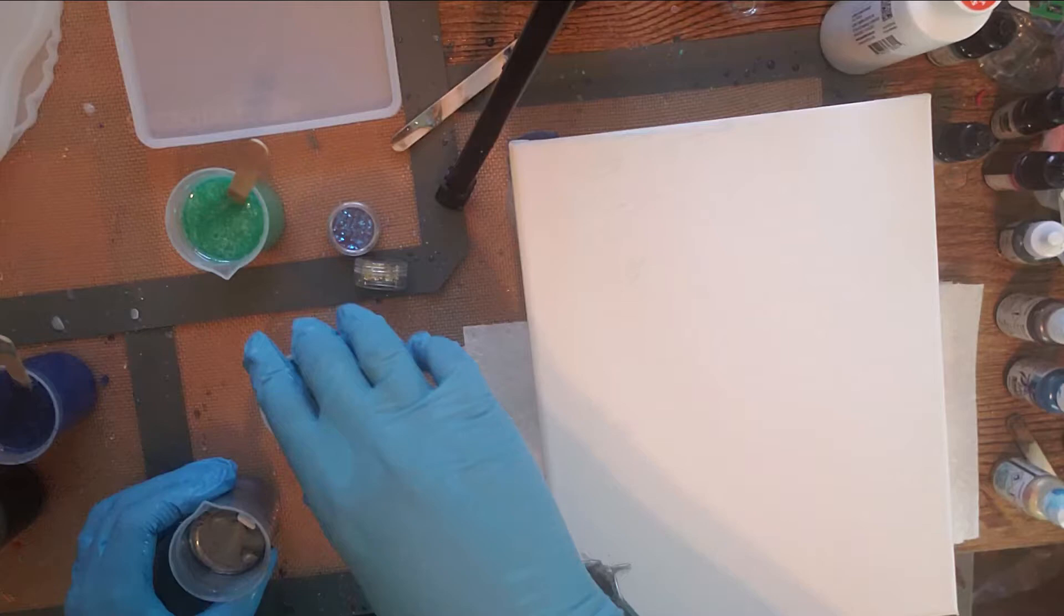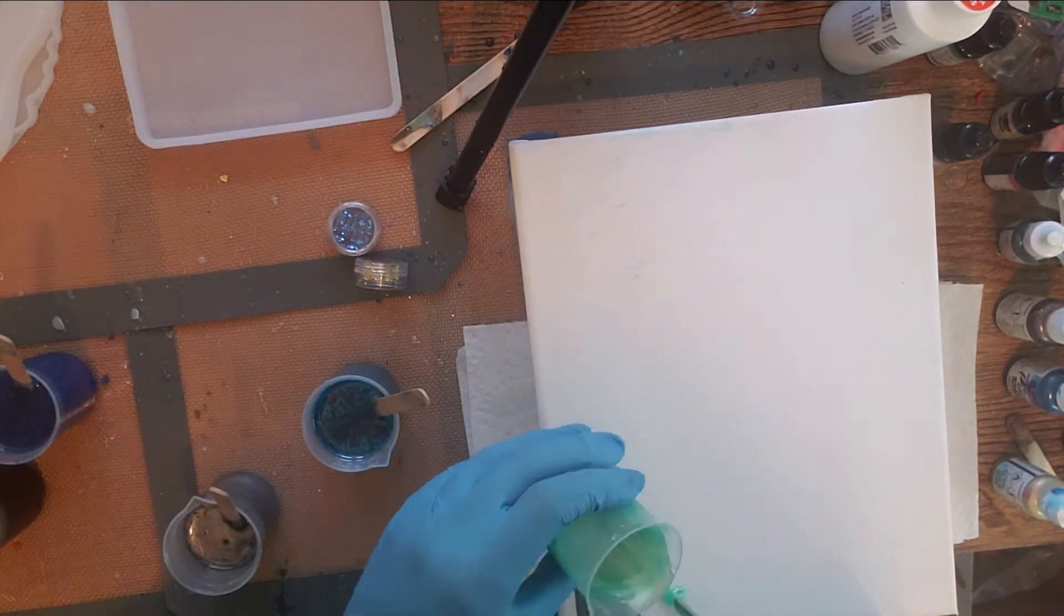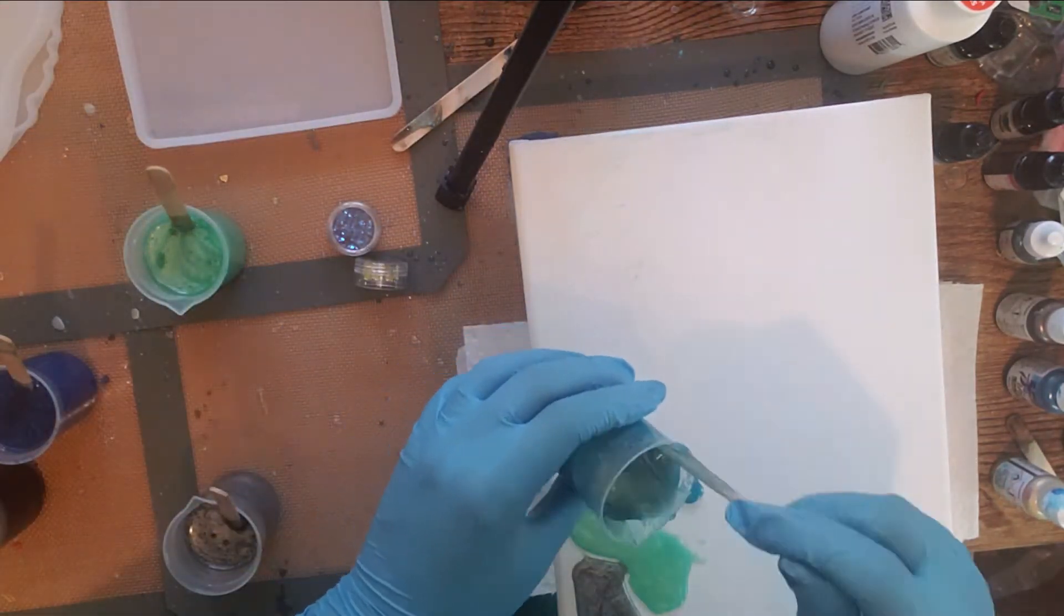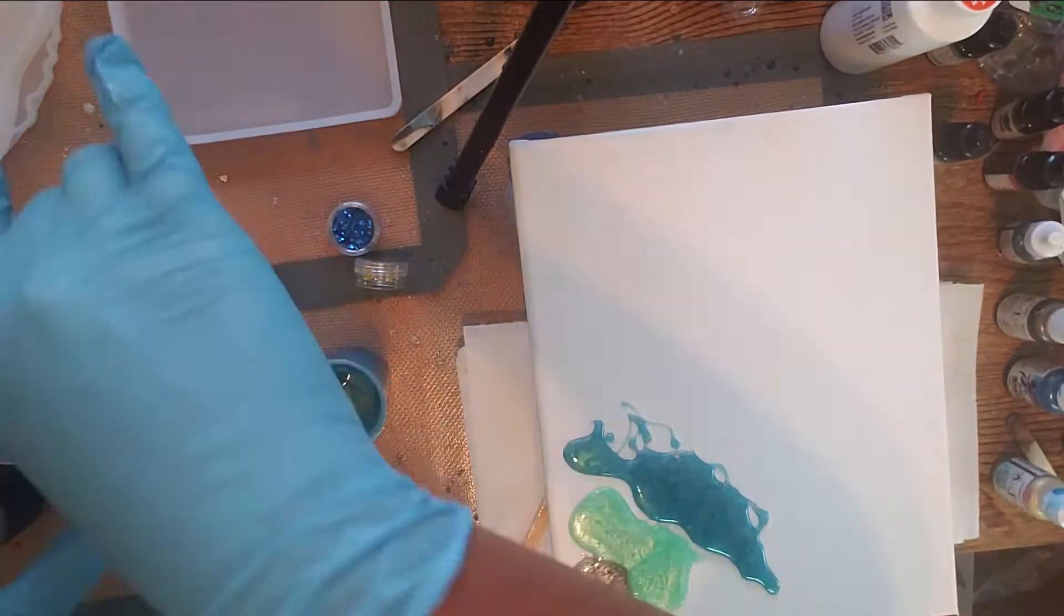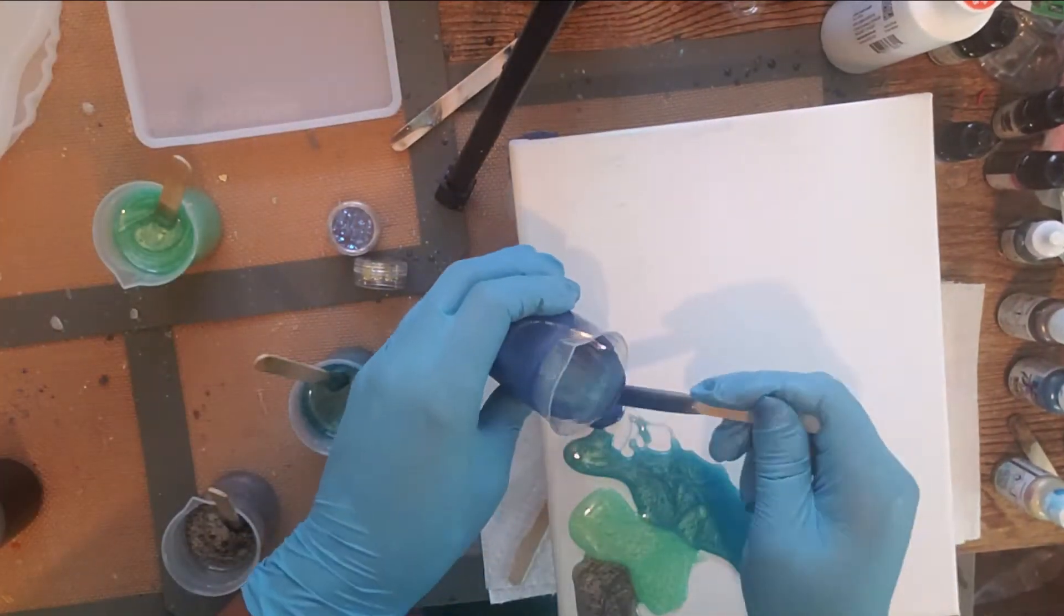So first up, I'm going to work on a pour art piece. I've already mixed up my resin and pre-mixed the colorants, which I believe I used mica powders for all of these.